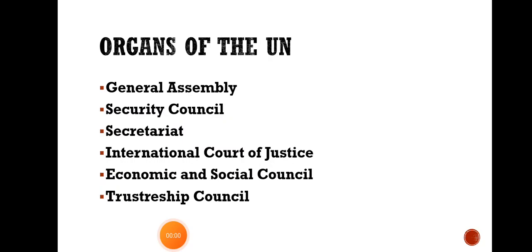Good morning, dear students. Today we will study about the organs of the United Nations. There are six organs of the United Nations. One of these organs — the International Court of Justice — has its headquarter in The Hague, Netherlands, and all the other organs of the United Nations have their headquarters in New York, USA.